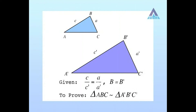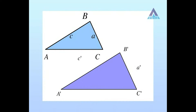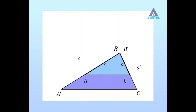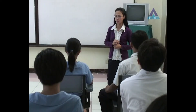We want to prove that triangles ABC and A'B'C' are similar. We begin by placing triangle ABC on top of triangle A'B'C' so that angle B coincides with angle B'. Note that AC divides the two sides A'B' and C'B' proportionally, since it is given that C over C' equals A over A'. What conclusion can you now draw from this observation?